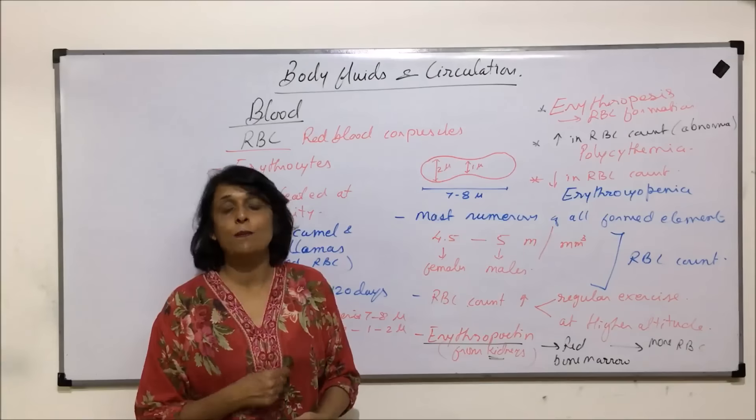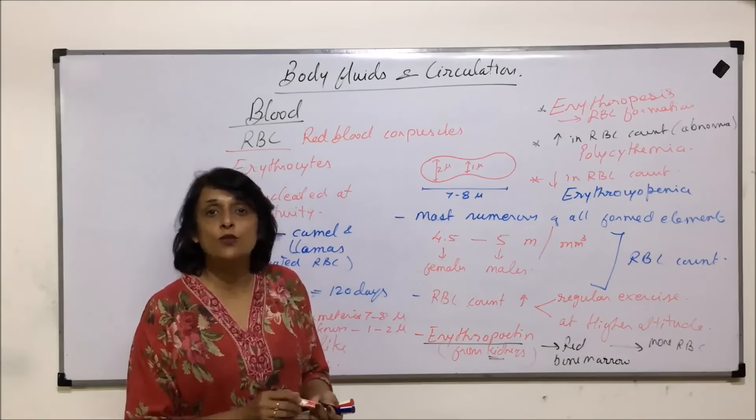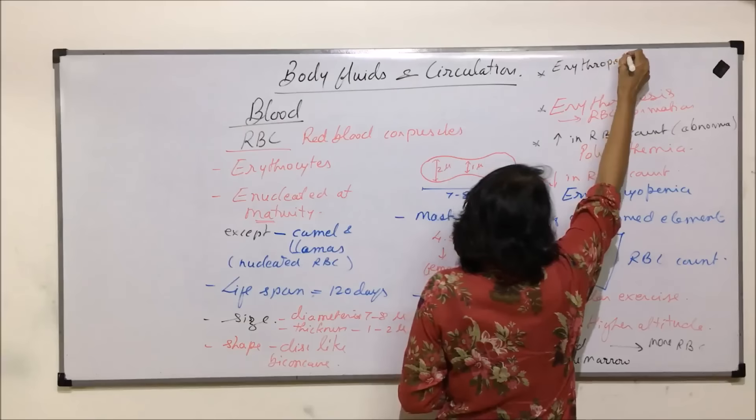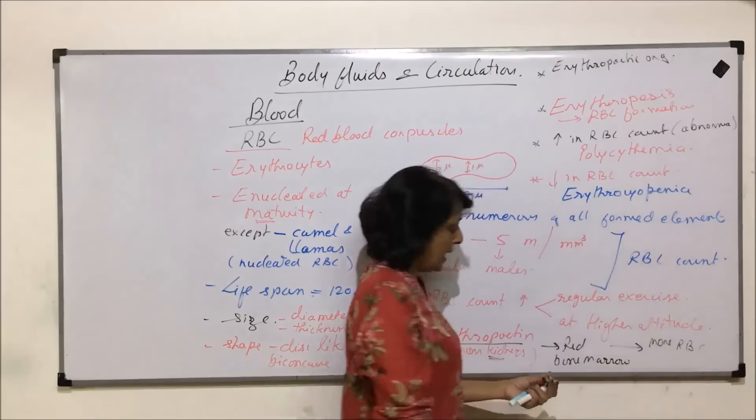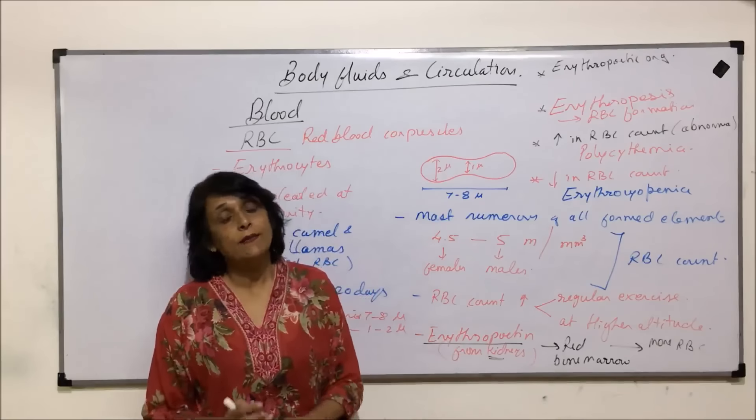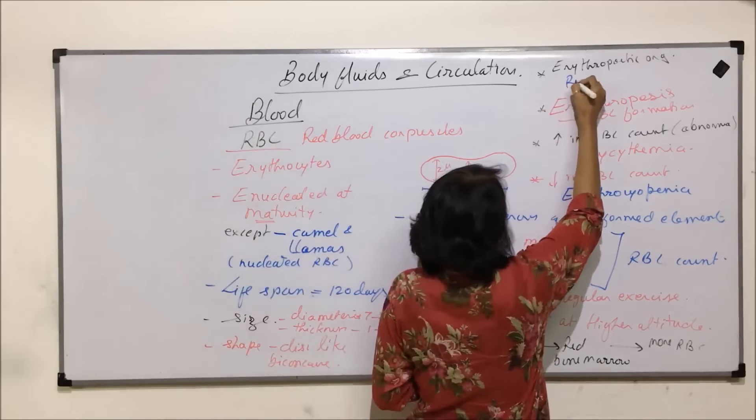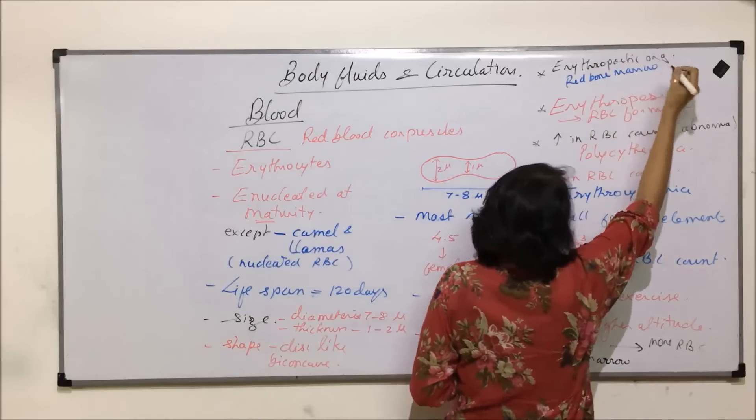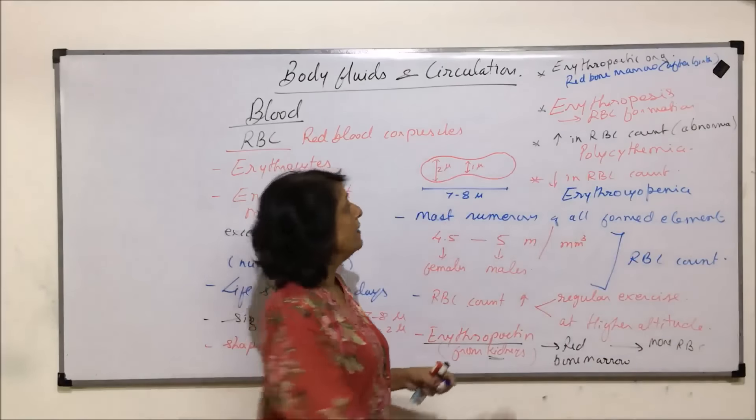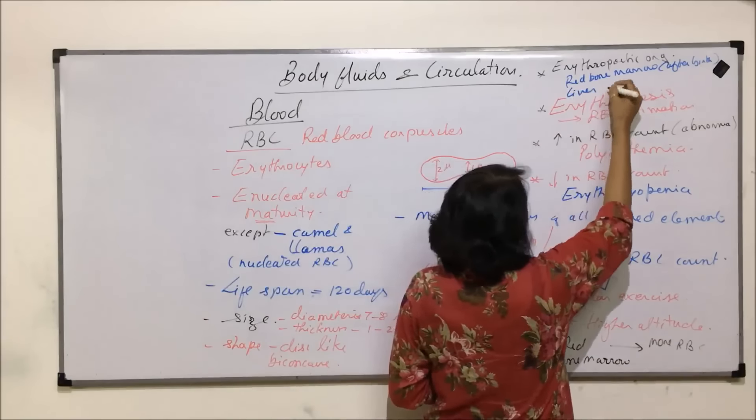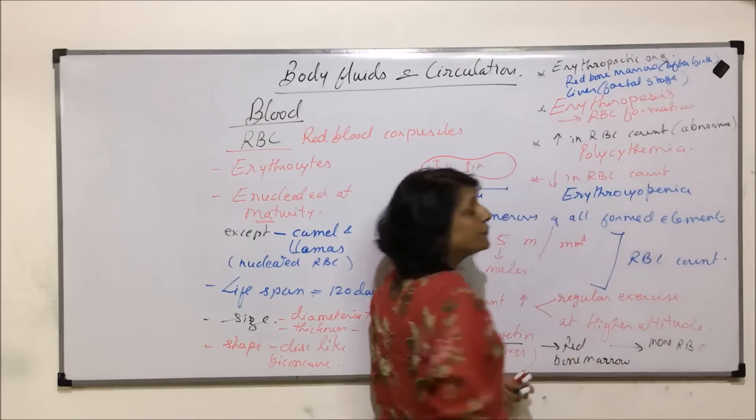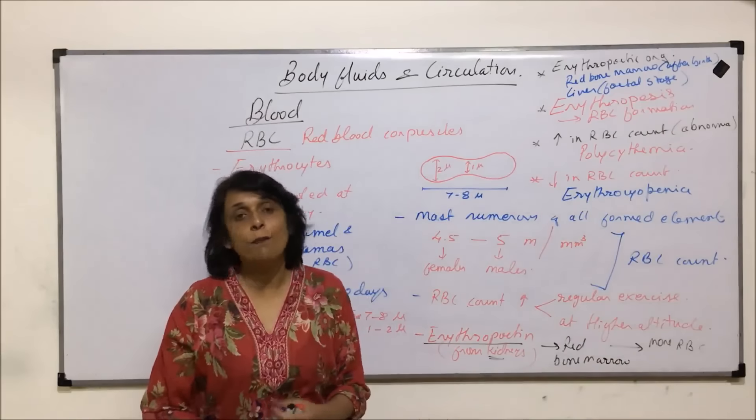The organs which help in RBC formation, they are known as erythropoietic organs. In case of human beings, the red bone marrow is the erythropoietic organ. Red bone marrow, and this is after birth. In fetal life, it is the liver which is erythropoietic. In fetal stage. After birth, that function is taken over by the red bone marrow.